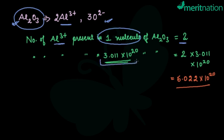If you're talking about these many molecules—3.011 × 10²⁰ molecules—so how will you calculate? Just multiply by this number. Two times this number will give you the total number of ions present in these many molecules of aluminum oxide. So this is our answer: 6.022 × 10²⁰.